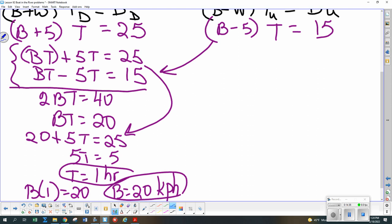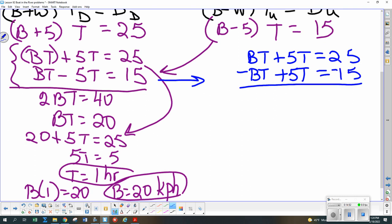Others of you took our system and maybe kept your BT plus 5T is 25, but multiplied the bottom one by a minus 1. So it became minus BT plus 5T is minus 15. Put those together and you had that 10T was 10. So T was 1. And then you did the same thing of plugging in to get that B was 20 kilometers per hour. But got the same answer either way. Your choice of which you felt more comfortable doing first.